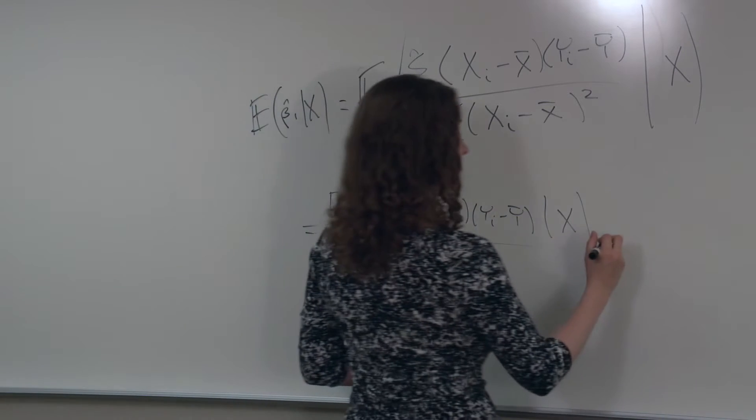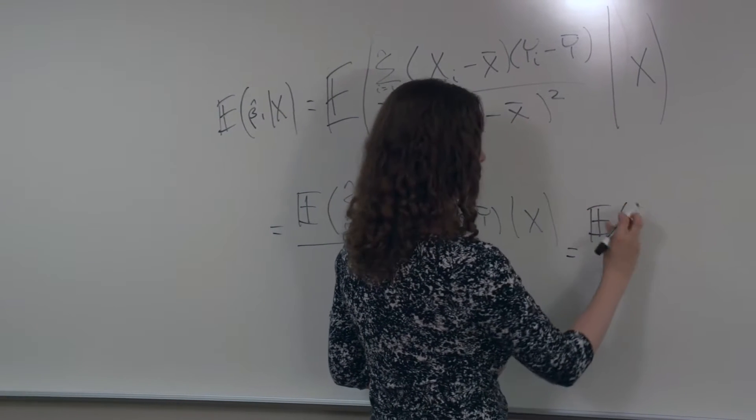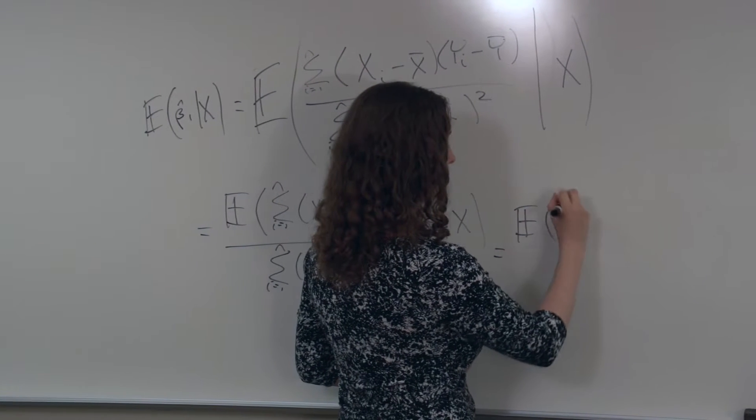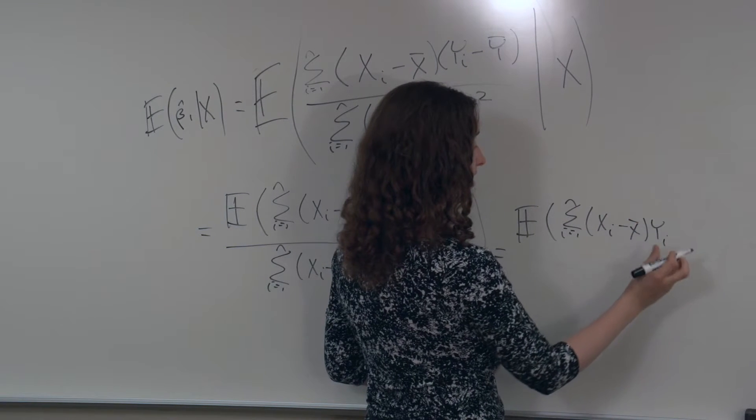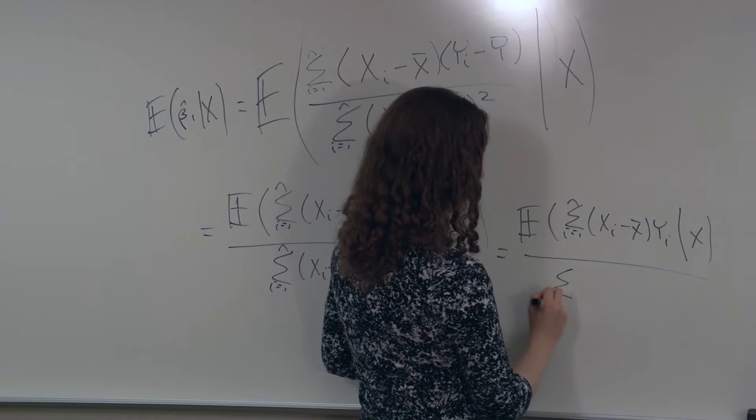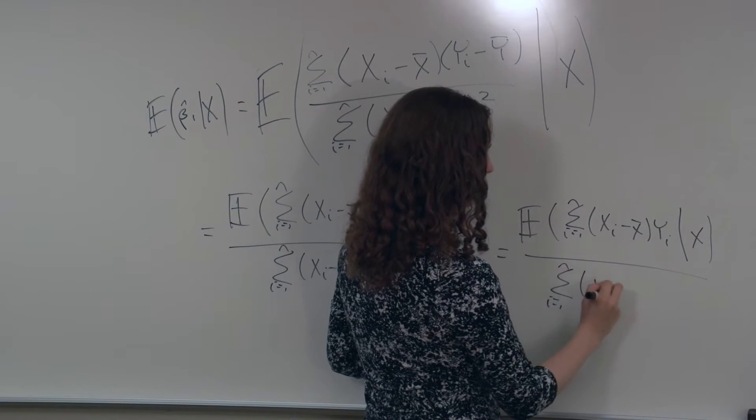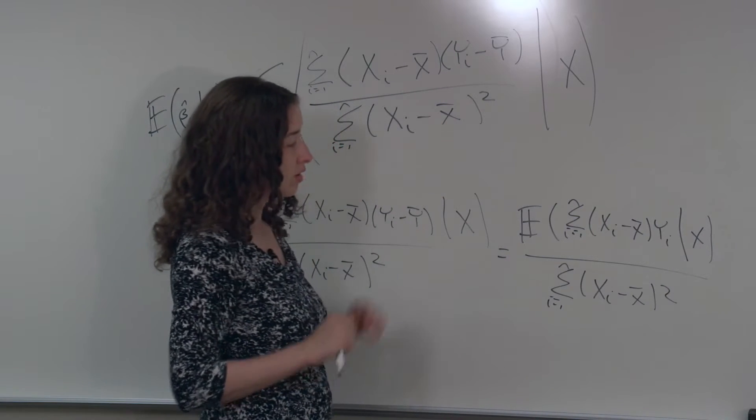So I'm going to write this again. I've got the expected value of the sum of xi minus x-bar times yi, given x, divided by this denominator. What's next?